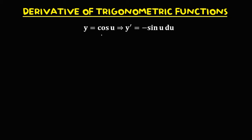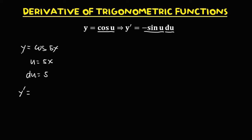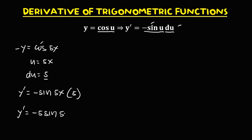For the derivative of cosine, that's negative sine u times du. So if we have y equals cosine 5x, u equals 5x and the derivative of u is 5. Since the derivative of cosine is negative sine, we have negative sine 5x times du, and du is 5. Therefore, y prime is equal to negative 5 times sine 5x.